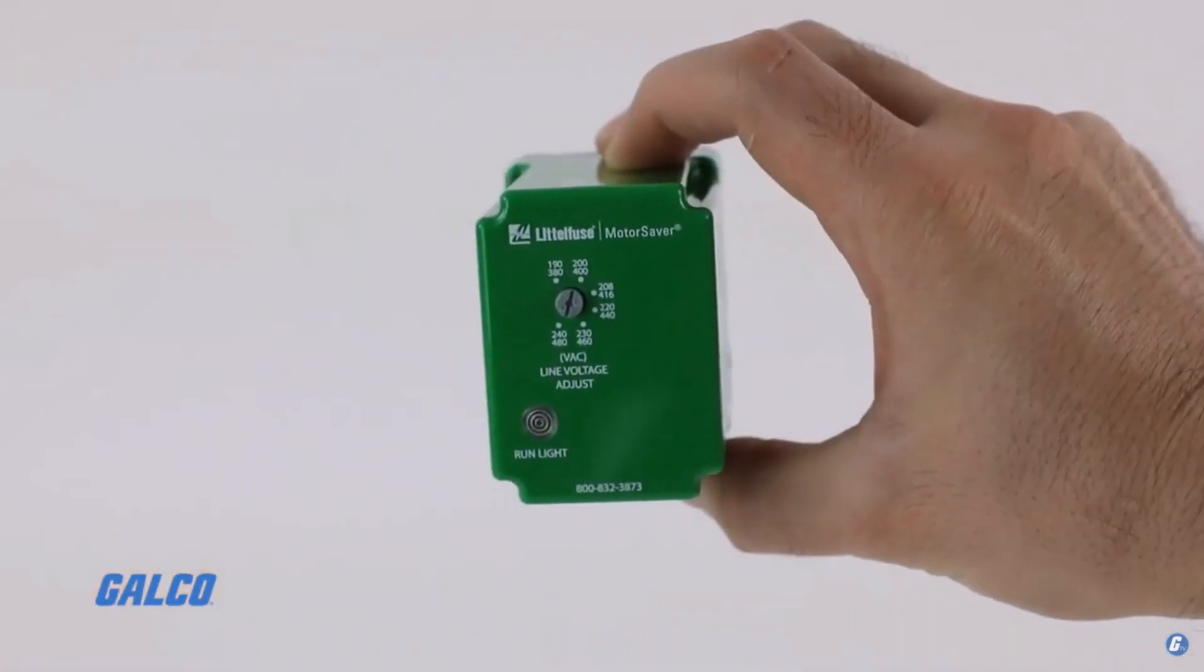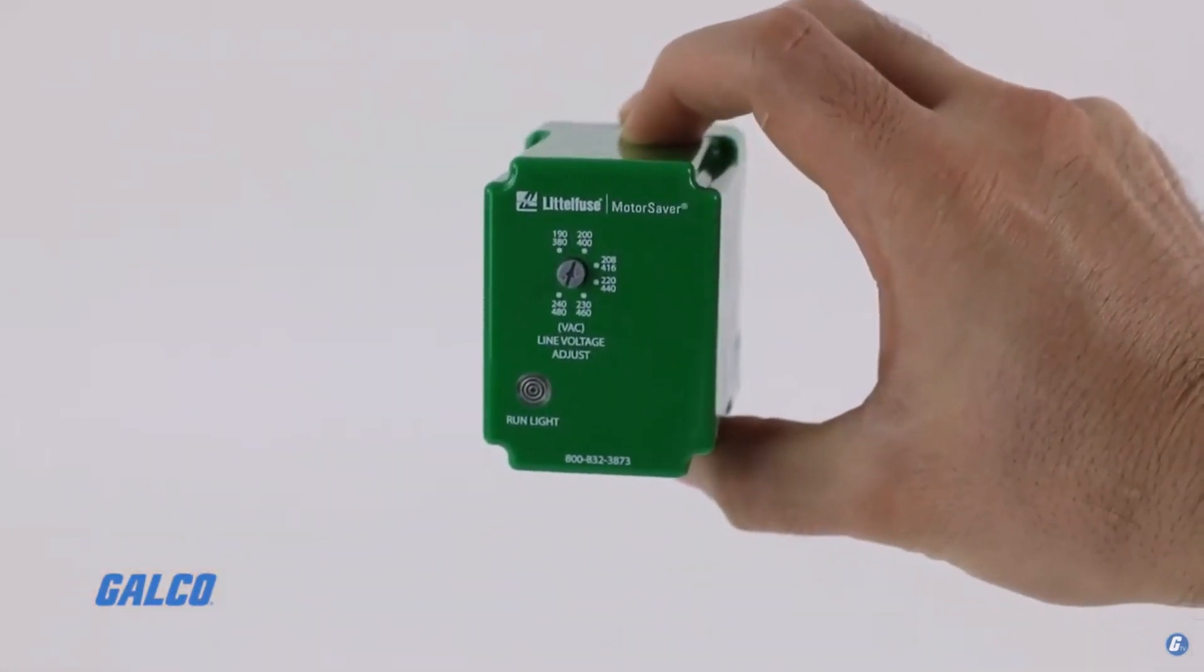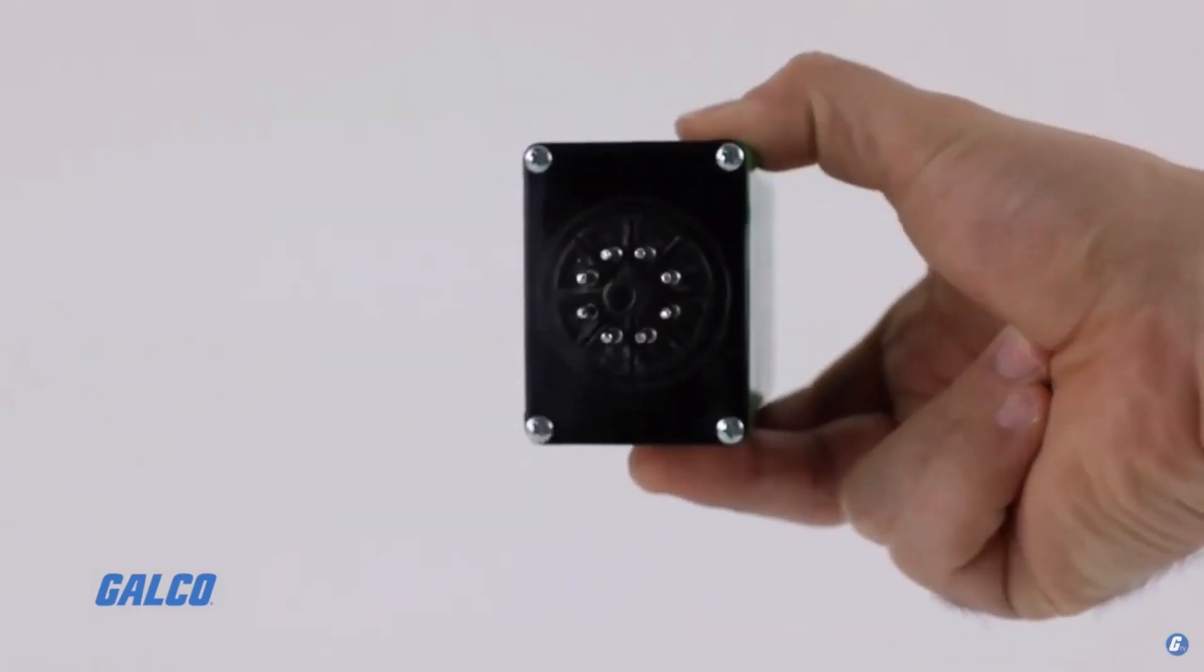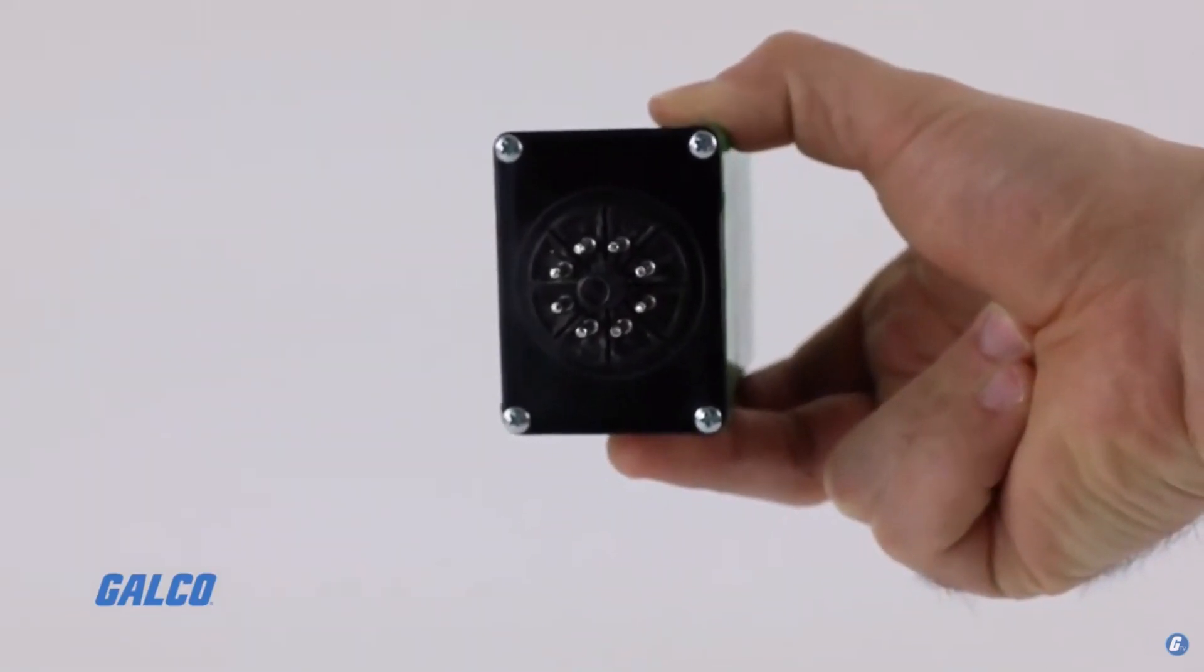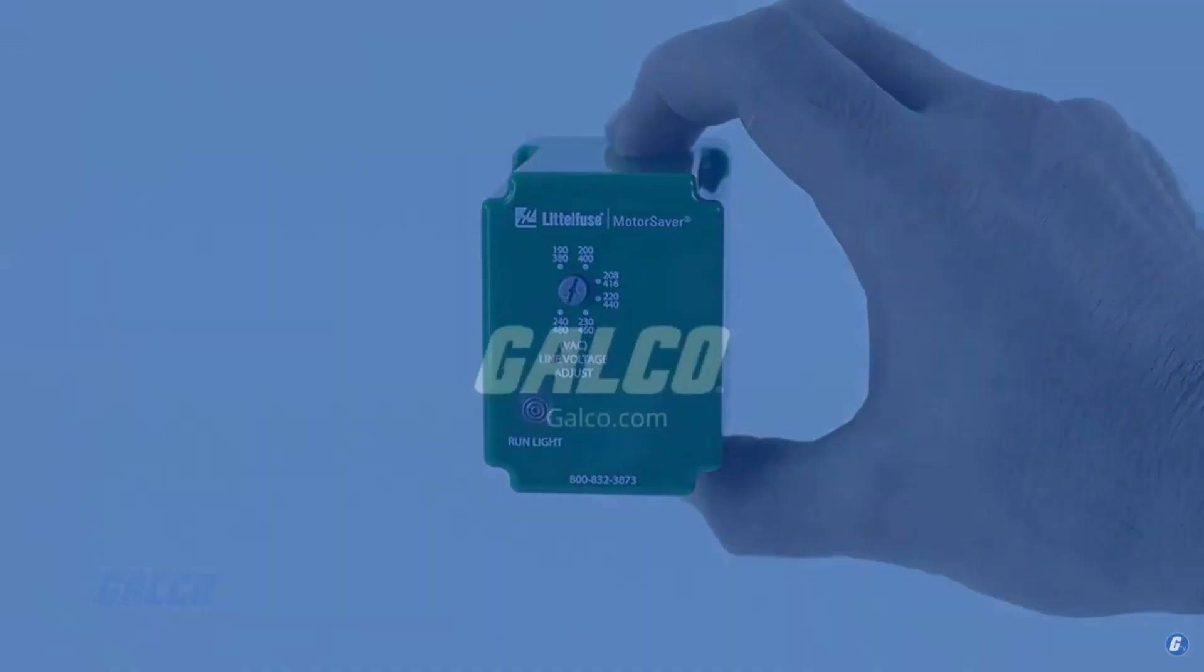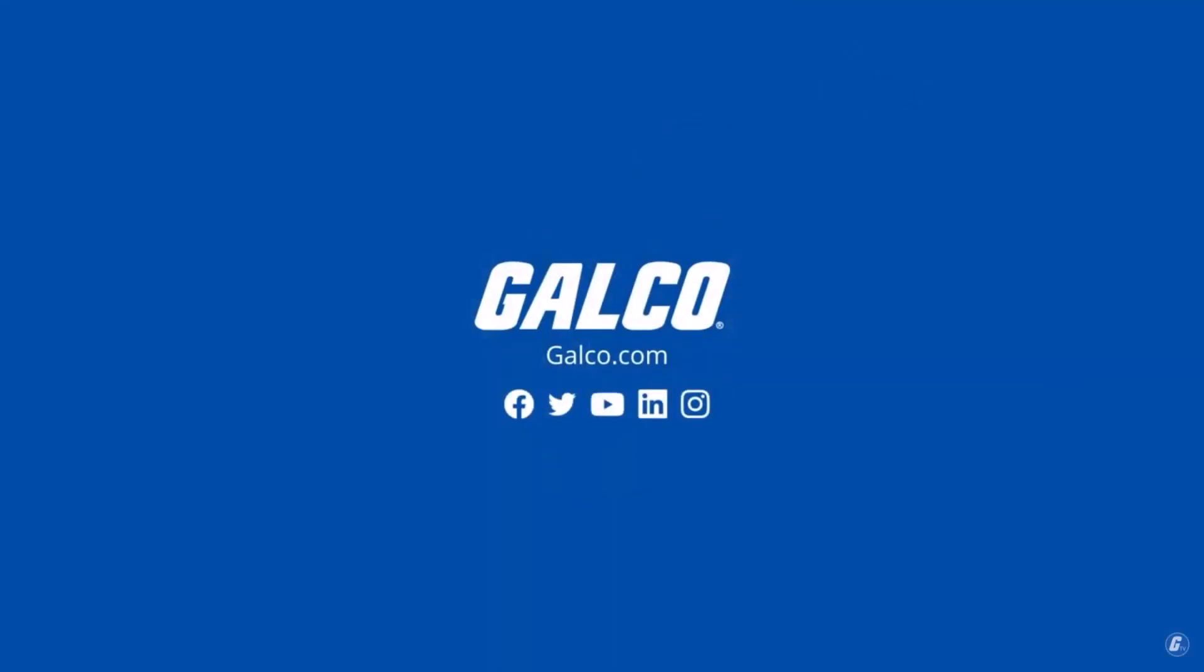The 201A is installed via 8-pin plug-in mount with a compact design to easily fit into crowded panels or machines. Visit galco.com to learn more.